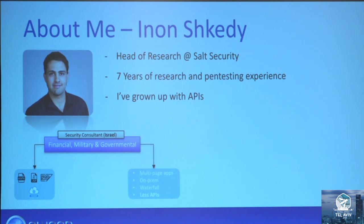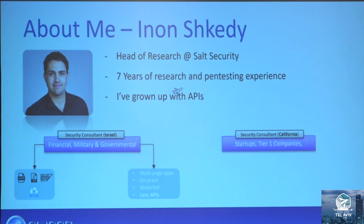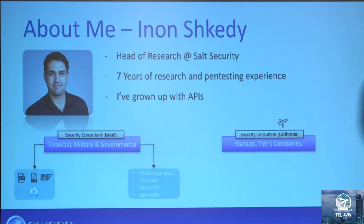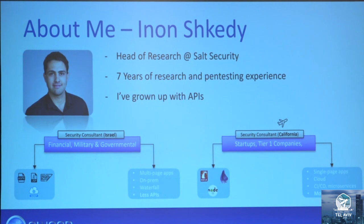Then I decided to leave Israel. I bought a one-way ticket to Silicon Valley in California and started a new episode. I was a security consultant for startups and T1 companies. I saw new technologies like Ruby on Rails, Elixir, Node.js, with new concepts like single-page applications, cloud, and CI/CD. And the most important part: all these applications deeply rely on APIs.